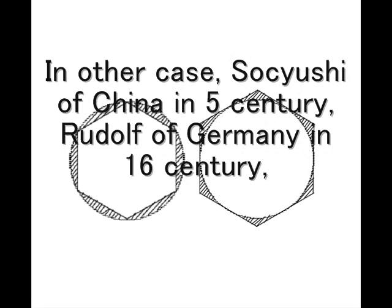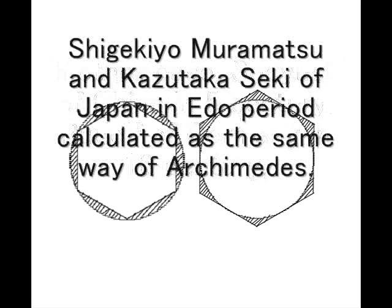In other cases, Sochushi of China in the 5th century, Rudolf of Germany in the 16th century, and Shigekio Muramatsu and Kazutaka Seki of Japan in the Edo period, calculated pi in the same way as Archimedes.